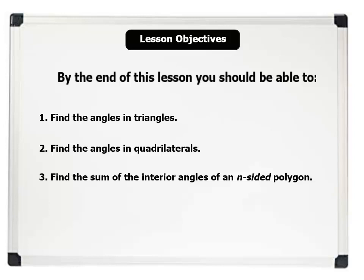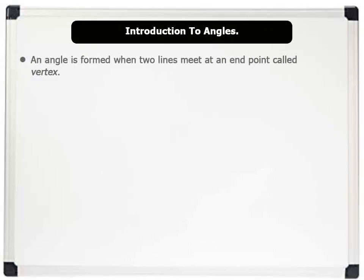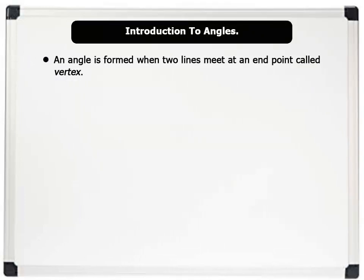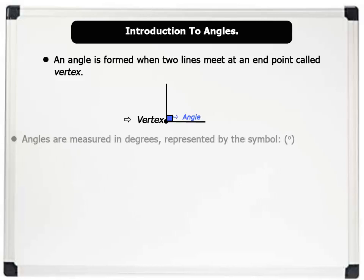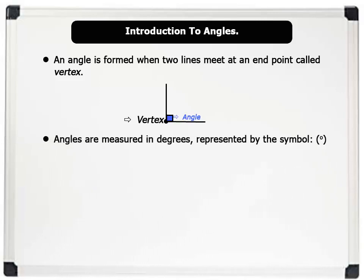Let us now learn what an angle is. An angle is formed when two lines meet at an endpoint called a vertex. For example, when these two lines meet at this point called vertex, an angle is formed. Angles are measured in degrees, represented by the degree symbol.